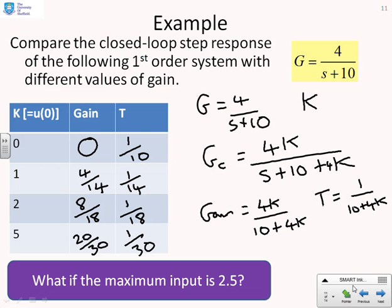Again, you notice the same pattern. The gain increases as you increase the proportional gain, and the time constant gets faster as you increase the proportional gain. We've noted up here that the initial value of the input is the same as the proportional gain. So as you increase K, you get a bigger u(0).